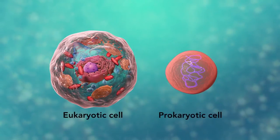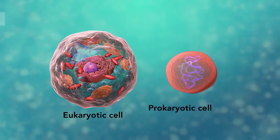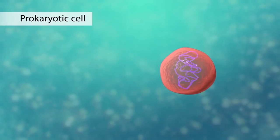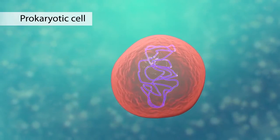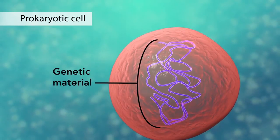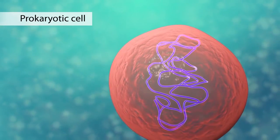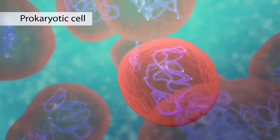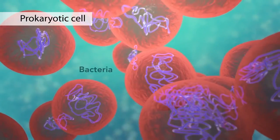The second category is prokaryotic cells. They don't have a nucleus or membrane enclosed organelles. They do have genetic material but it's not contained within a nucleus. Prokaryotic cells are always one-celled or unicellular organisms such as bacteria.